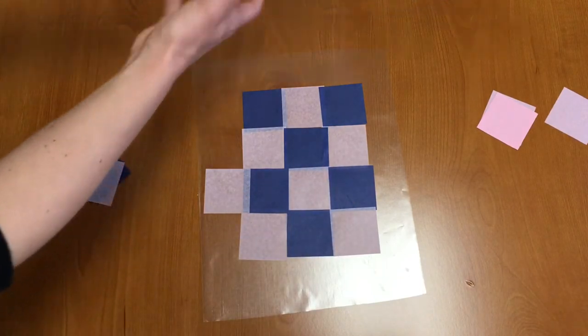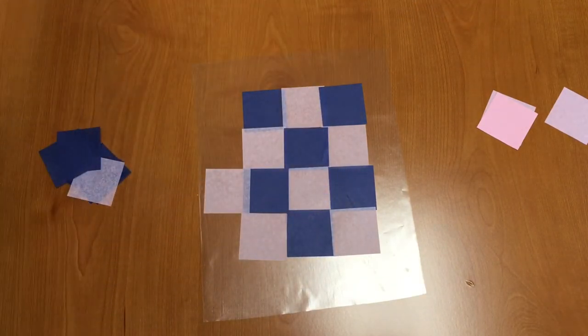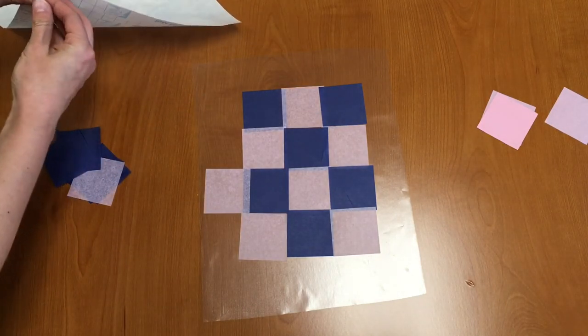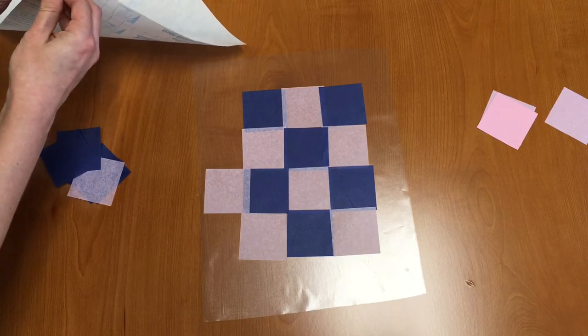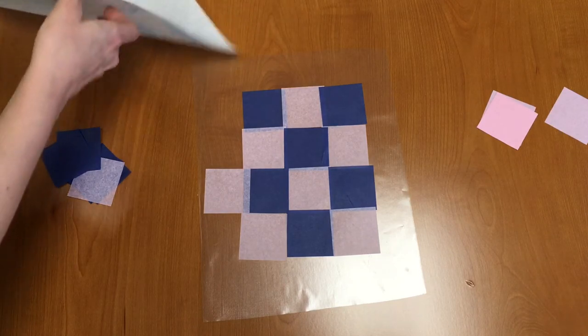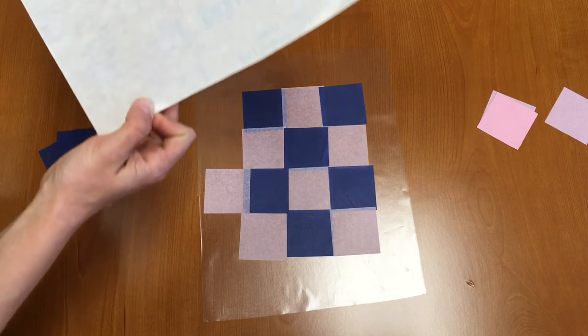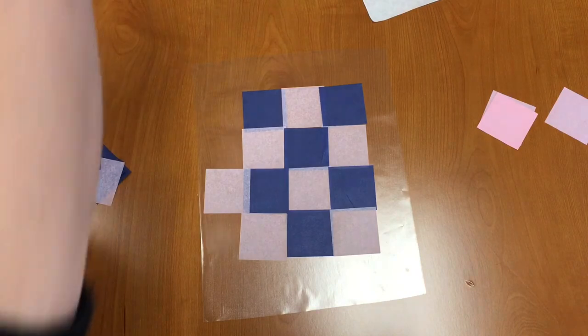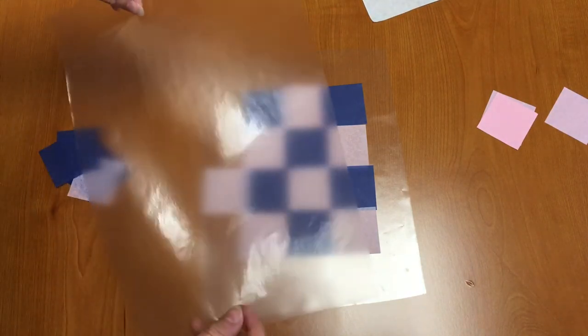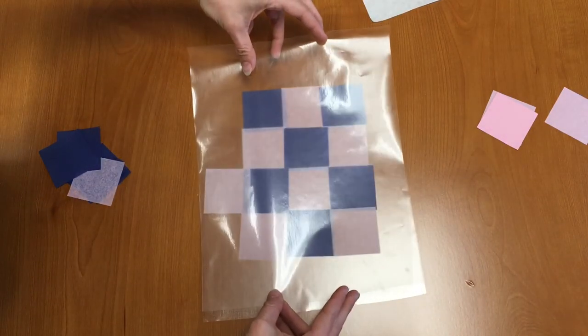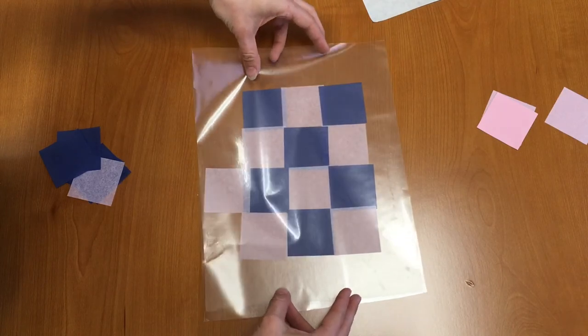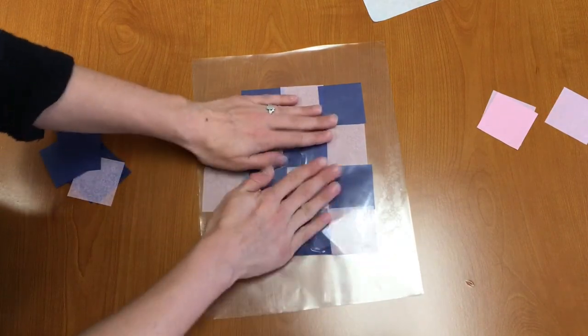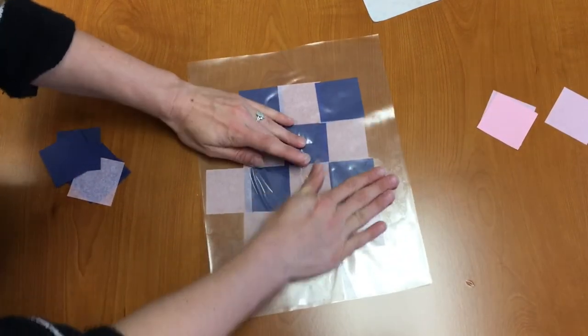So our next step is we're going to take our other piece of contact paper and we're going to carefully peel it off. So let me get my peel going here. Peel it off all the way again slowly and carefully and then we're going to place this piece of contact paper over the other one. Sticky sides facing each other. It doesn't need to be absolutely perfect. You can just get it on there as straight as you can. See mine's not perfect but that's okay.